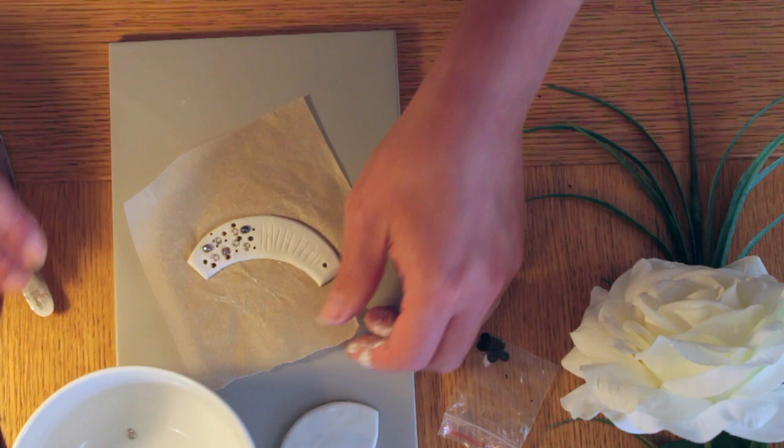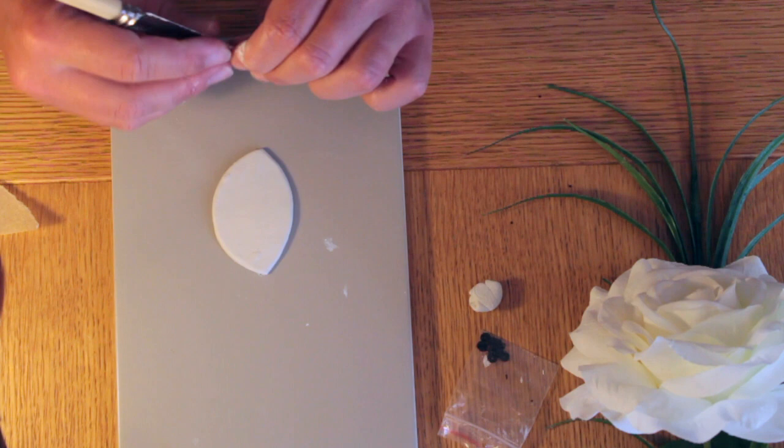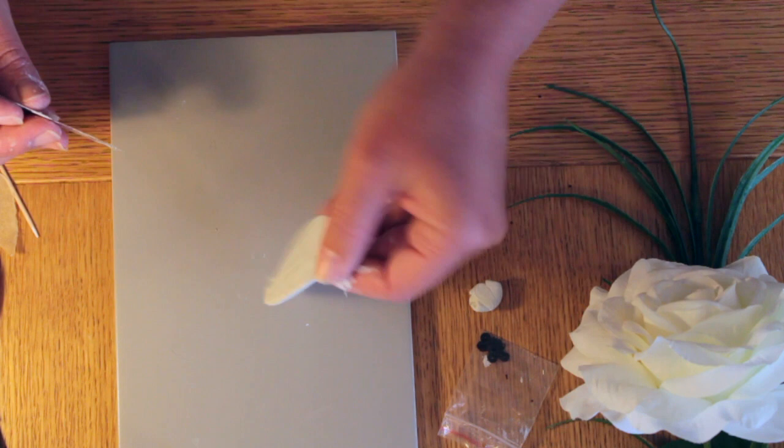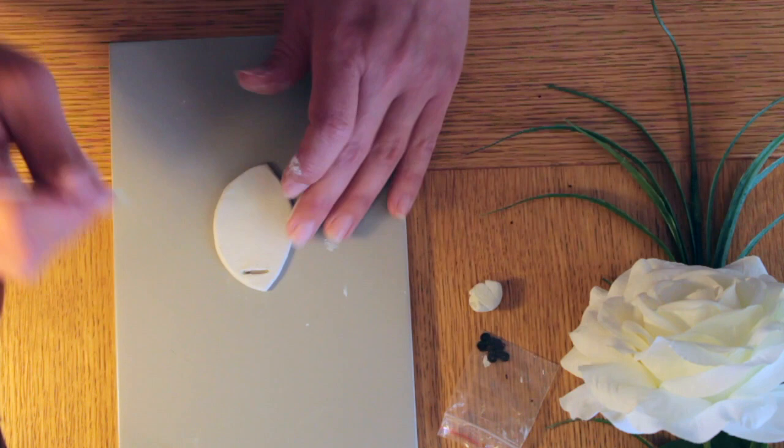Lovely, and so set that one aside to dry. You want them to dry fully before we do anything else with them. So this one that we cut out before, we're going to use it because it's a nice leaf shape. I'm going to add a long hole so we can add a bit of ribbon through this, and I think I'll turn it into a slight leaf design with some dots.